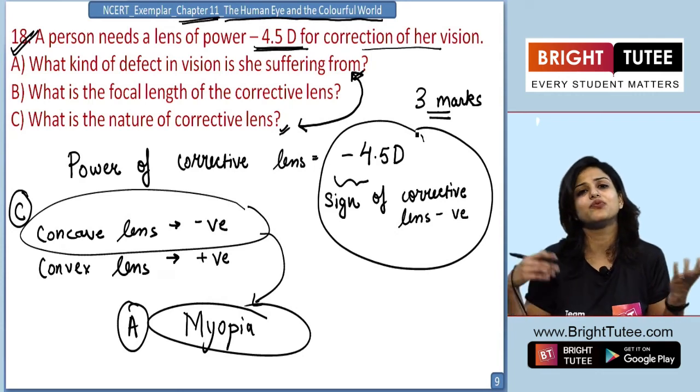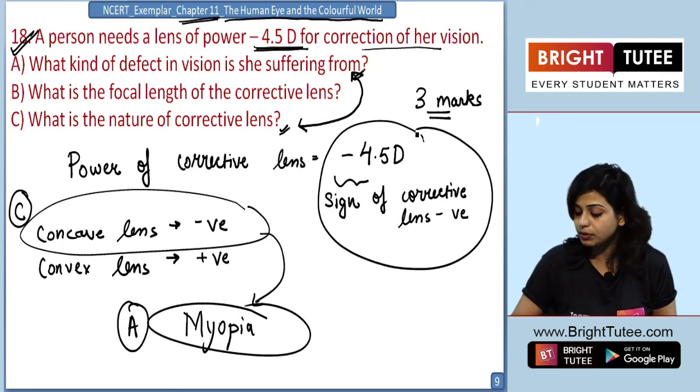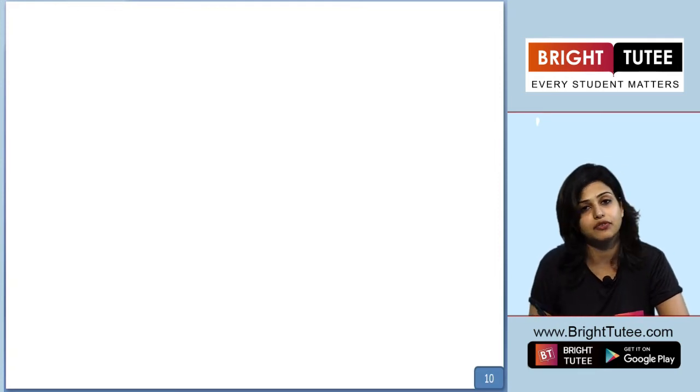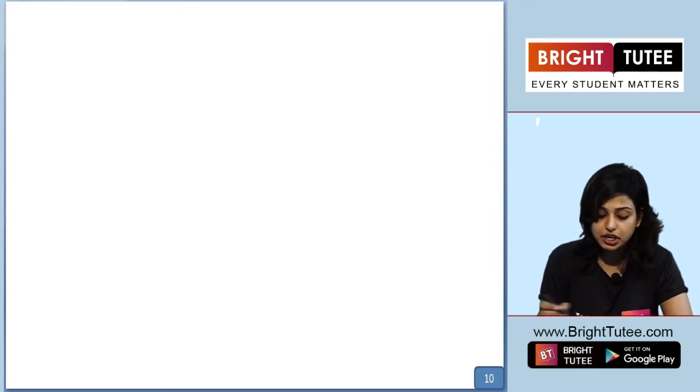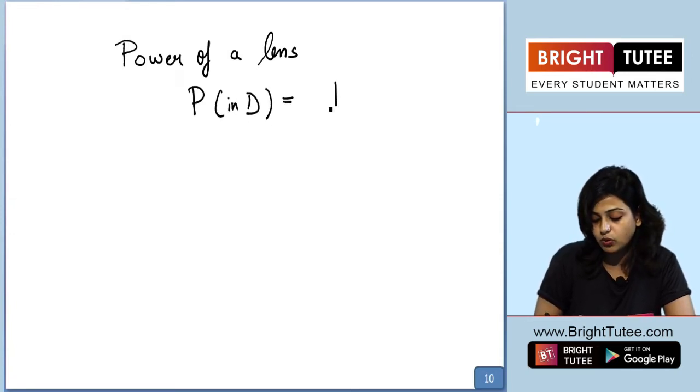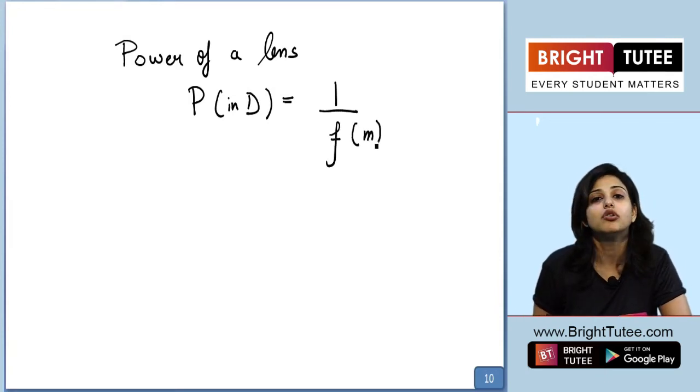Now problem B is very simple because you have the prior knowledge of the chapter on light reflection and refraction. The formula for power of a lens is: P in diopters equals 1 upon f in meters, where f is the focal length.